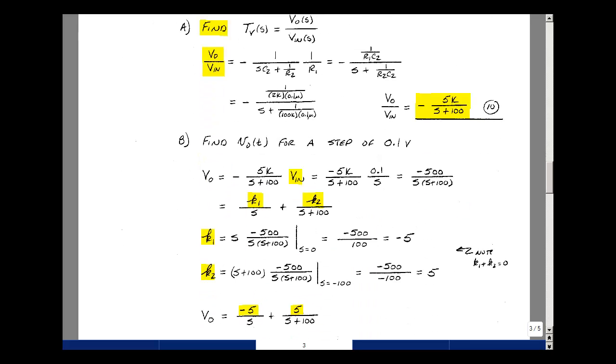Next, can you predict the output given a step of 0.1 volts? Take our transfer function, cross multiply by V_in, and now we're going to replace V_in by a 0.1 volt step, which is 0.1 divided by s. V_out in the S domain is minus 500 over s plus the quantity, s plus 100.